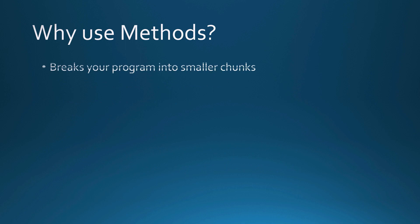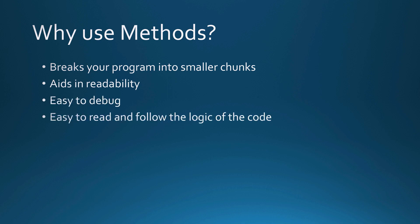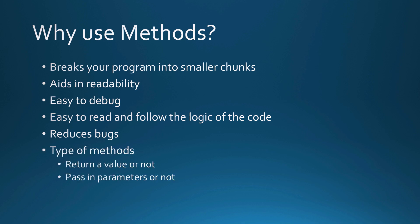So why should we use methods? It helps break our program into smaller chunks. This aids in readability, makes things easier to debug, easier to read and follow the logic of the code, and hopefully reduces our bugs as well. There are different types of methods — a method can return a value or not, and you can pass parameters in or not.